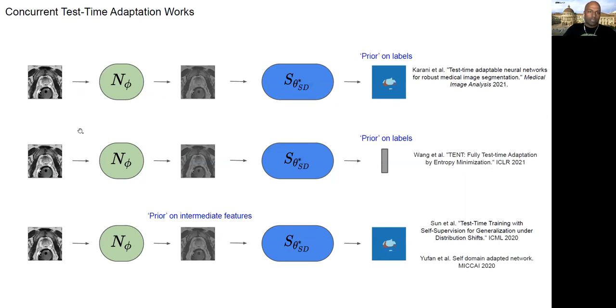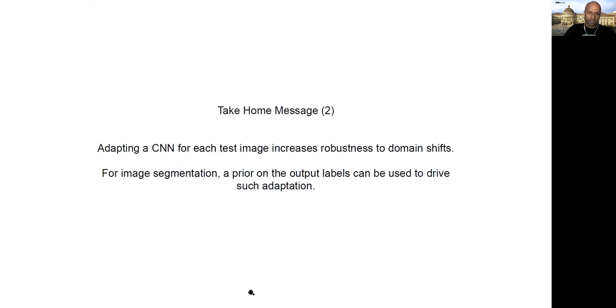And just before I finish, I would like to show you a few other concurrent test time adaptation works. So what we did was we had this kind of an implicit prior using a denoising autoencoder in the label space of segmentations. There's a recent ICLR paper, which does it for image classification. And the prior that they have is that they want to minimize the entropy of the prediction. And then there were a couple of works last year, which instead of having a prior in the output space, they had a prior at some intermediate feature space using self-supervised networks.